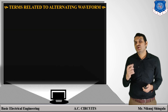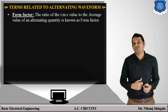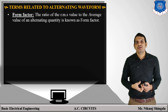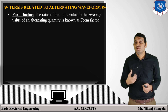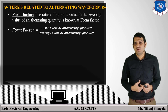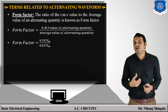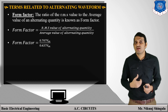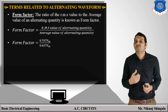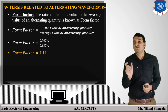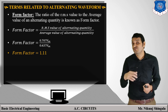Now moving towards two important factors: form factor and peak factor. The ratio of the RMS value of the alternating quantity to the average value of the alternating quantity is known as form factor. Form factor = RMS value / average value = 0.707Vm / 0.637Vm. Vm cancels out, giving form factor = 1.11. This form factor value is for a symmetrical waveform; if the waveform is not symmetrical, the form factor value will be different.